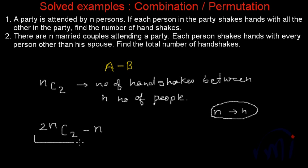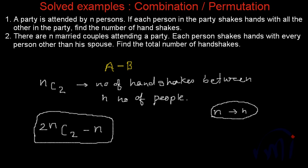So 2nc2 minus n is the total number of handshakes when n couples attend a party and each person shakes hands with every other person except his or her spouse. These are the two variations — it is a very common and simple problem. Now let me solve these two expressions further.